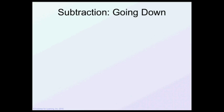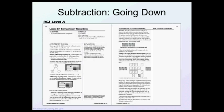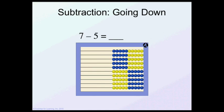Let's do subtraction by going down on the abacus. 7 minus 5. I'm going to start with 7, take away 5, and I can see that my answer is 2.